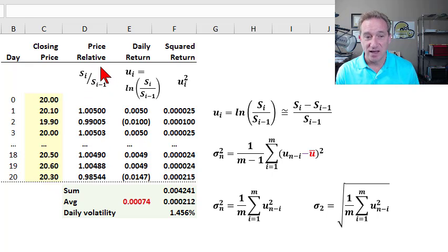In the second column, we have price relatives, also called wealth ratios, and you can see these are simple. We just take, in this case, the price on day one divided by the previous day's price, and so we get a series of price relatives that is going to be, on a daily basis, pretty close to one.